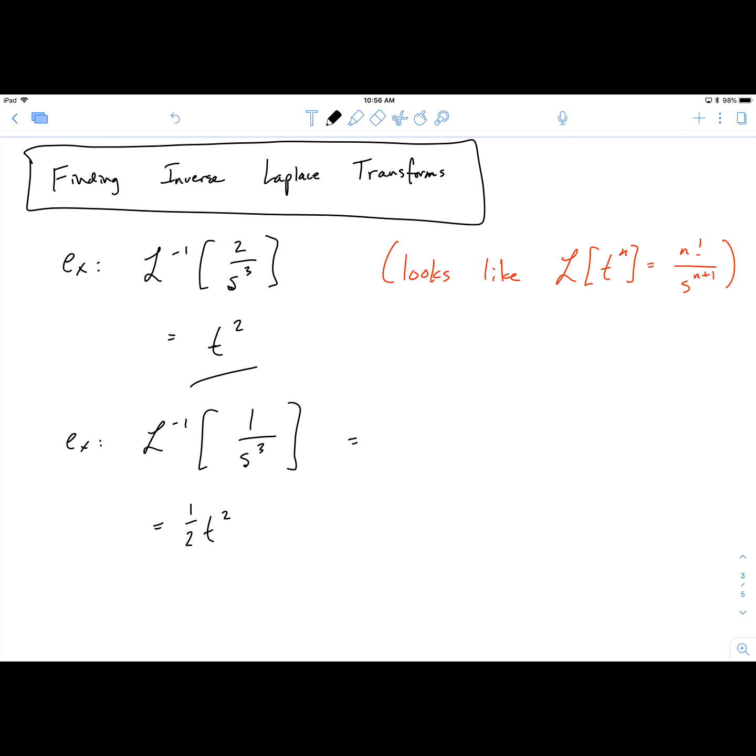You can also think about this as, okay, I want to have 2 over s cubed. But to do that, I have to multiply by 2, and to keep things balanced, I should also multiply by a half. And then break out the 1 half and do it like so, which gets you to the same place.